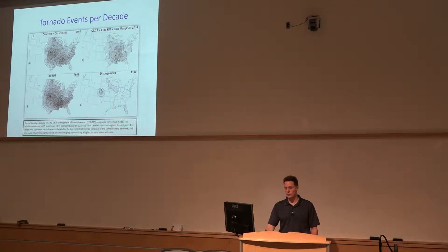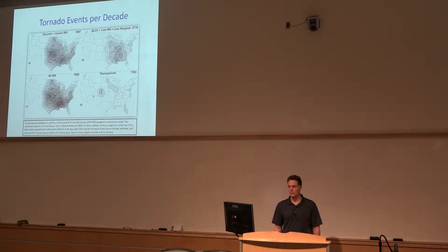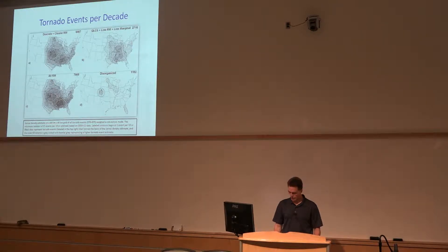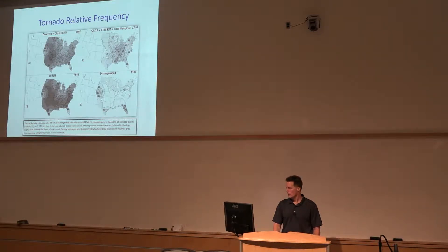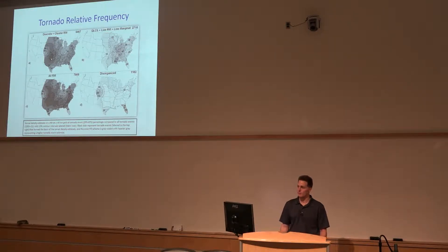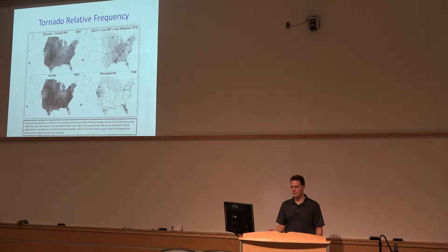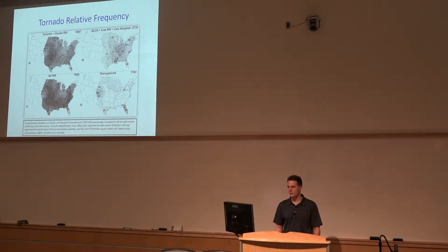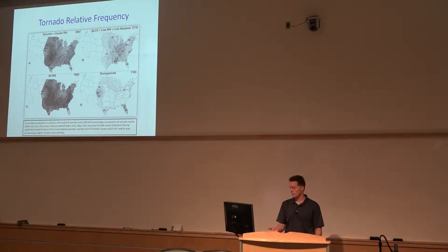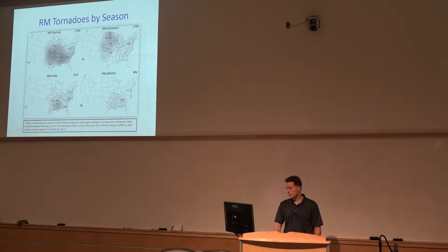The same sort of frequency extends down into Dixie Alley. The big difference is just there are more linear-type modes to the east, so tornadoes are just as frequent in the Mississippi Valley — it's just a wider distribution of modes. You can even see Northeast Colorado, which is a smoothed version of the Denver cyclone with non-mesocyclonic tornadoes forming in that convergence zone. The main takeaway on relative frequencies: in western Oklahoma, about 80% of all tornadic storms are discrete or cluster right-moving supercells, but over toward Indiana it's somewhere in the order of 40 to 50%, meaning almost half of tornado-producing storms are something other than typical supercells.